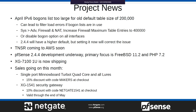For project news this month, the April 2018 IPv6 Bogans list was a little too large for the old default table size of 200,000. It wasn't necessarily tied to the 2.4.4 upgrade, but people noticed it around the same time. If you get a filter load error saying it can't load the Bogans table, you can disable Bogans from all your interfaces, or increase the table entries limit to 400,000 under System > Advanced > Firewall. In 2.4.4, the default will increase to 400,000.